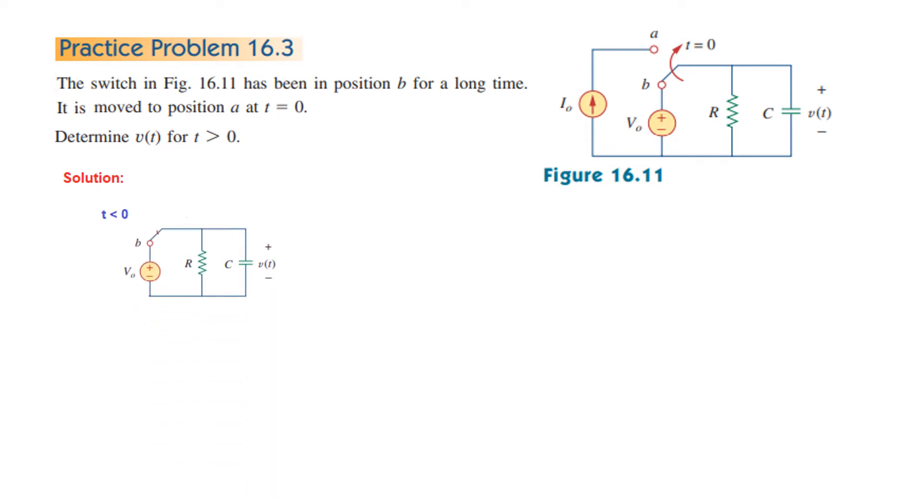First of all, at t less than 0 when the switch is here, we draw that part of the circuit separately. Since the circuit is in steady state, the capacitor behaves like an open circuit but is fully charged with the supply voltage. This voltage will be called V0 at t equals 0, so we can write V0(t) equals capital V0, the battery voltage.